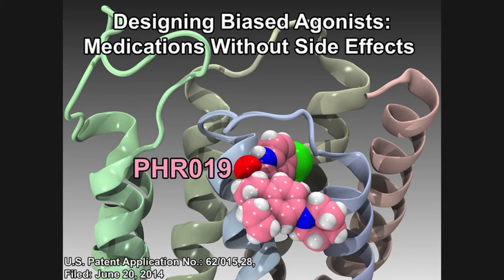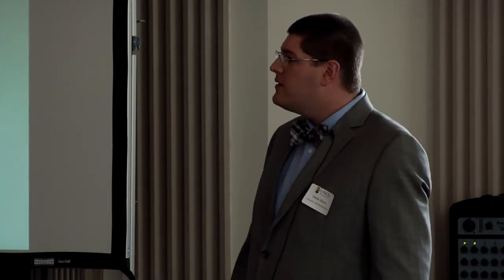The reason it is a biased agonist is because while we can see that it can partially insert into the receptor, it can't completely insert, and this prevents it from causing other types of signaling. So in other words, because PHR019 is just the right size, it only turns on one light switch. Ultimately, this may mean that PHR019 is a compound, or a drug, with few, if any, side effects, potentially making it the parent compound for 21st century drug design.